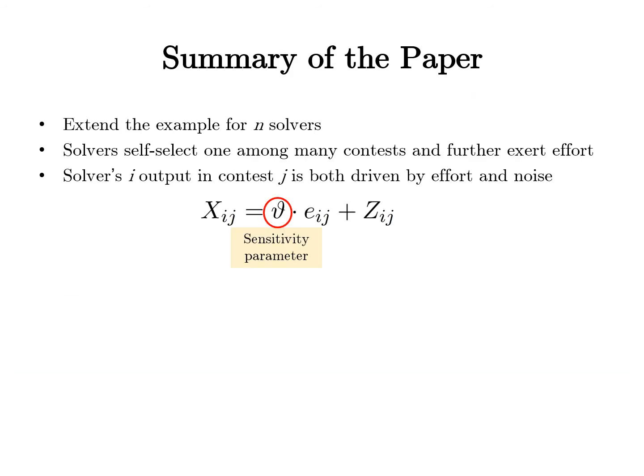In the paper, we extend the previous example to account for a solver population of arbitrary size, and we let solvers self-select contests and exert effort upon entering. We model solver output as additive effort plus noise, with a sensitivity parameter theta which captures the extent to which effort or noise drives the outcome. Contests with theta equals 0 are called ideation contests — contests where effort doesn't really matter and it's all about noise. In innovation, noise plays a central role, and we are interested in contests with small theta or even close to 0.